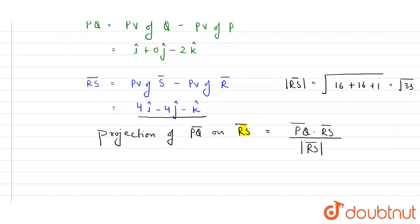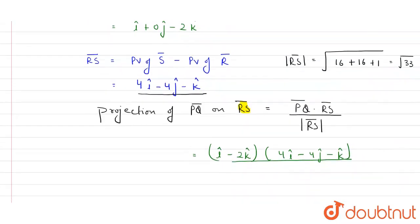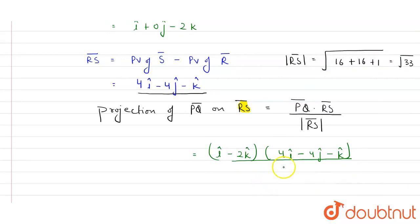Let's substitute the values, we have all the values. My PQ vector is i minus 2 k cap. And, my RS vector here is 4 i minus 4 j minus k cap, here. And denominator, magnitude of RS. It will be equals to root under 33.